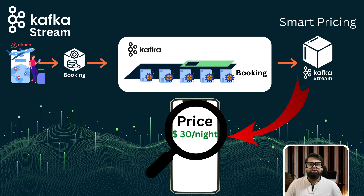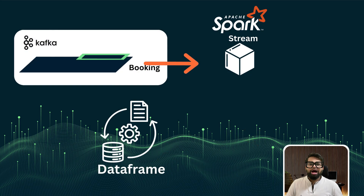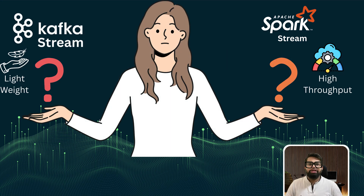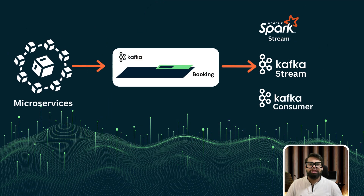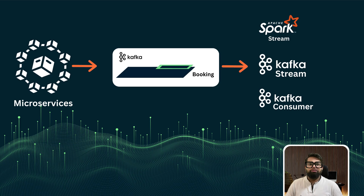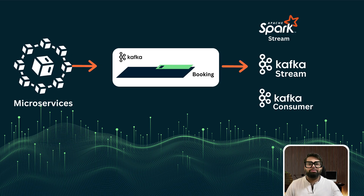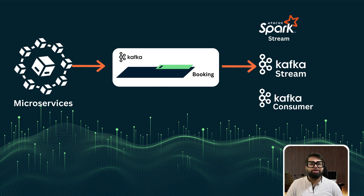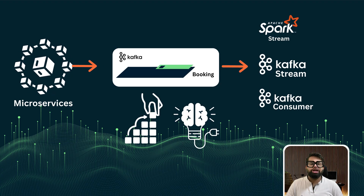Here is the cool part: you don't have to use Kafka Streams always. You can use Spark Structured Streaming instead. Spark lets you connect directly to Kafka topics, define your stream logic using DataFrames and SQL-like queries, and execute that logic at scale across a Spark cluster. Whether you are building a lightweight service with Kafka Streams or a high-throughput distributed pipeline with Spark Streaming, Kafka sits at the center, feeding real-time data into your analytics system. That's what makes Kafka so powerful in modern data engineering — it's not just a message bus, it's a foundation for real-time intelligence.